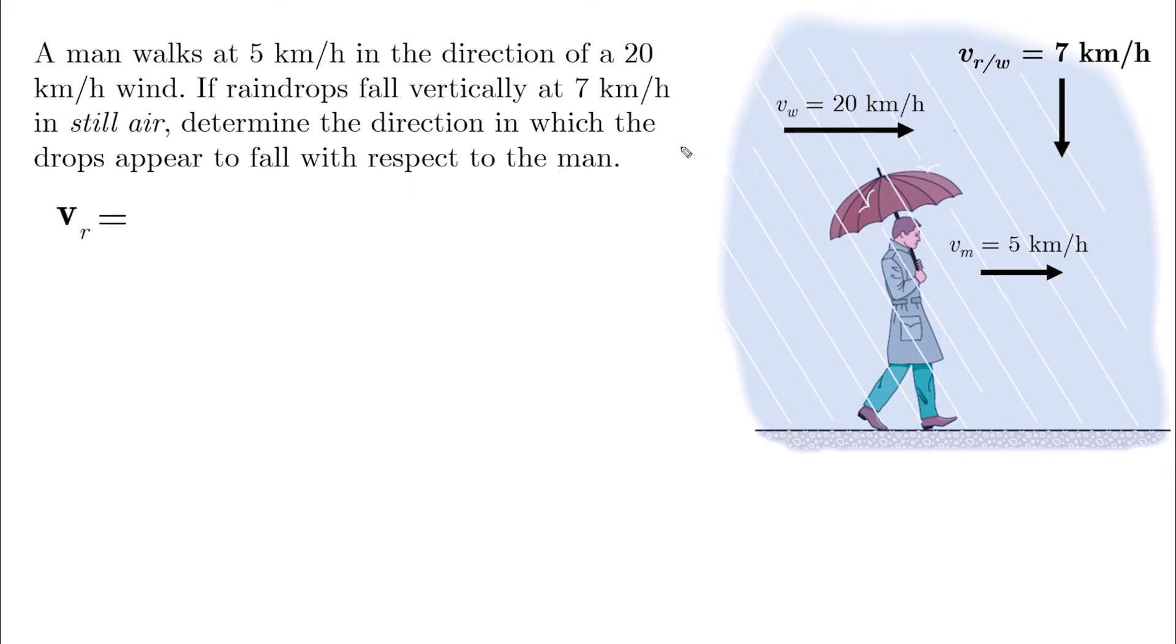Which is going to be Vw plus Vr relative to W. And this leads to the velocity of the wind, 20i, the velocity of the rain with respect to the wind, which is minus 7j. And this gives us the velocity components of the rain.